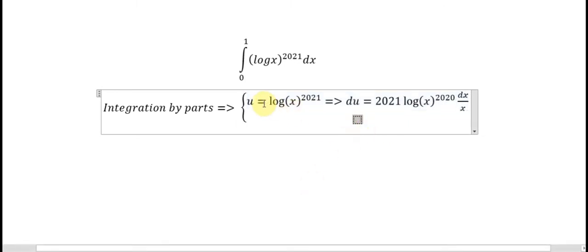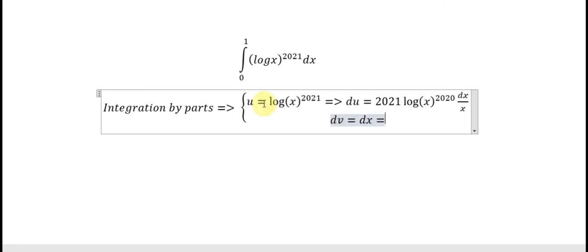And let's see the next one. dv is dx, so we have v equal to x.